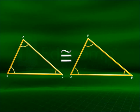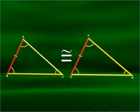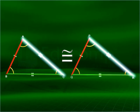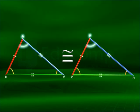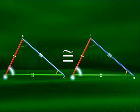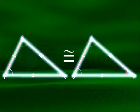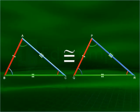Side AB corresponds to PQ, BC corresponds to QR, and AC corresponds to PR. Similarly, angle A corresponds to angle P, angle B corresponds to angle Q, and angle C corresponds to angle R. In other words, the corresponding line segments are equal in length and the corresponding angles have equal measure.